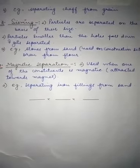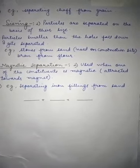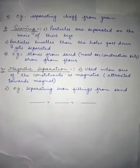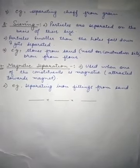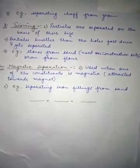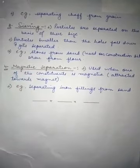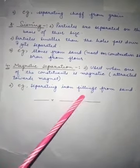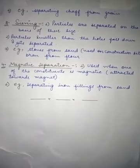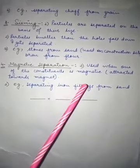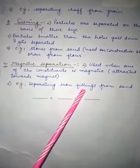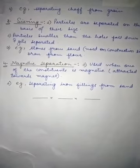The last method is magnetic separation. In this method, a magnet is used when one of the constituents is magnetic — meaning it is attracted towards a magnet. For example, if iron filings accidentally fall into sand, you can use a magnet to attract and separate the iron filings from the sand. I hope all students understood this. Thank you.